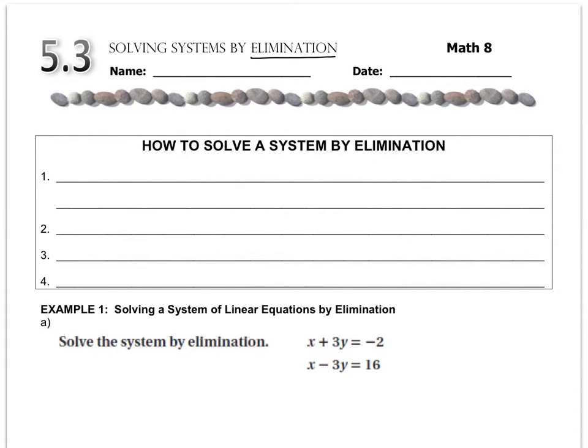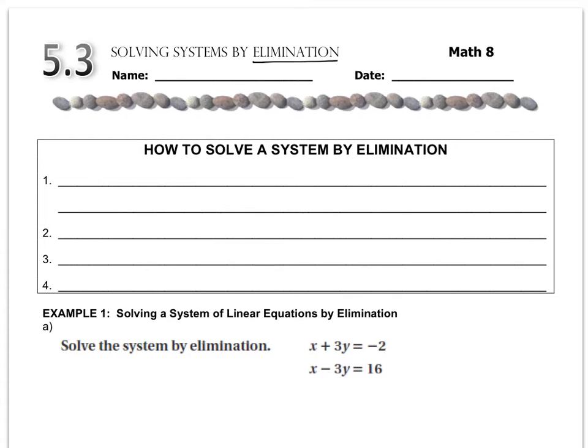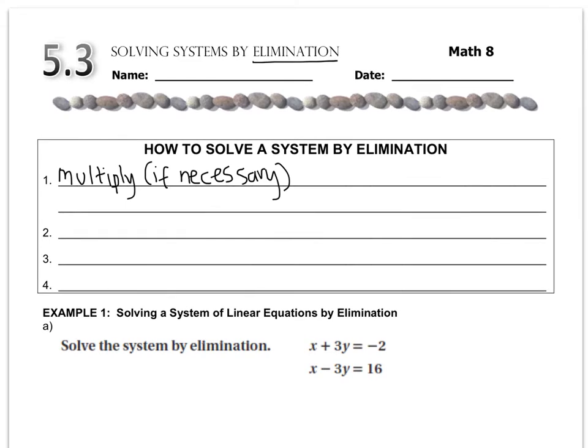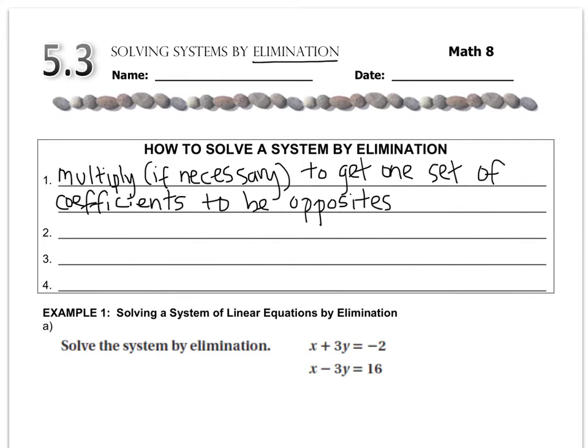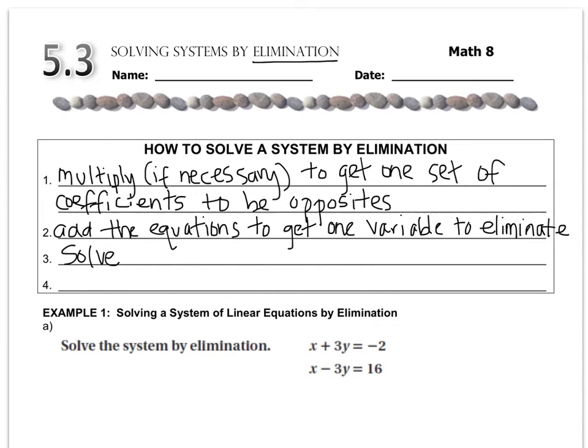So the first step I'm about to tell you might sound like a bunch of nonsense until you actually see what it means, but just play along. The first step is to multiply if necessary to get one of the coefficients opposites, and obviously I'll explain what that means when we encounter an example where it's necessary. Step two, however, you will always need, and that's to add the equations to get one variable to eliminate. The next step is to solve, and the final step is to plug the value in to find the other variable.